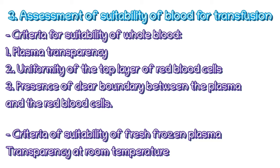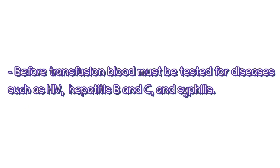In the assessment of suitability of blood for transfusion, the tightness of packing and correct certification are visually checked. The quality of blood or blood components is microscopically evaluated to ensure suitability. Criteria for whole blood include plasma transparency, uniformity of the top layer of red blood cells, and a clear boundary between plasma and red blood cells. For fresh frozen plasma, transparency at room temperature is required. Bacterial contamination causes the plasma to turn dull with a gray-brown shade, losing transparency with suspended flake-like particles, making it unsuitable for transfusion.